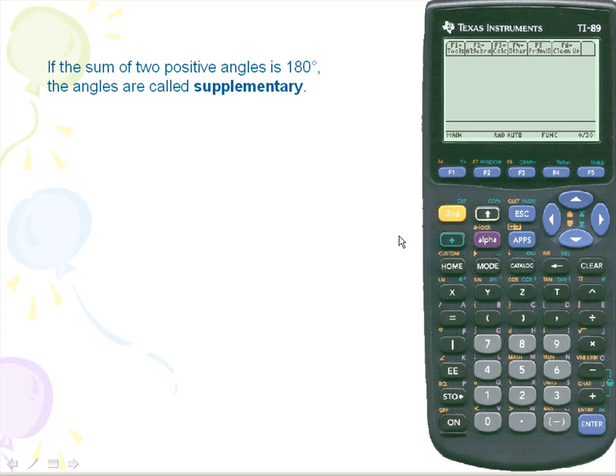Let's take a look at supplementary angles. If the sum of 2 positive angles is 180 then the 2 angles are supplementary.